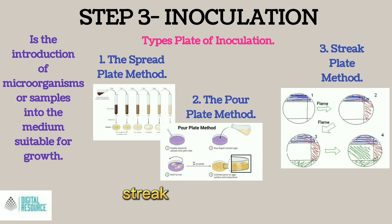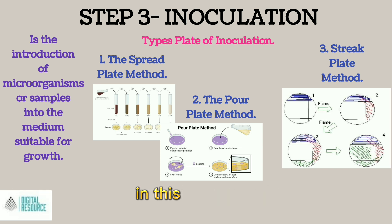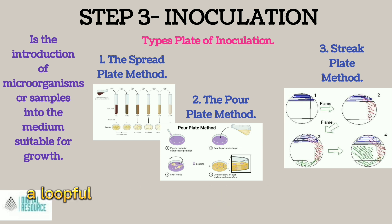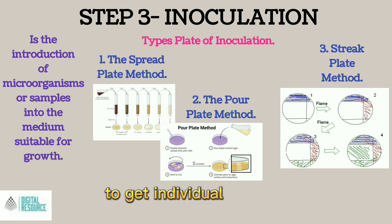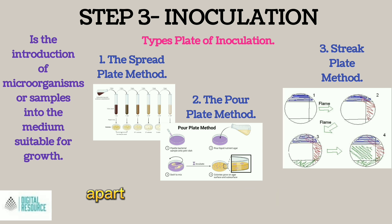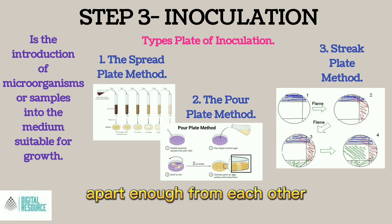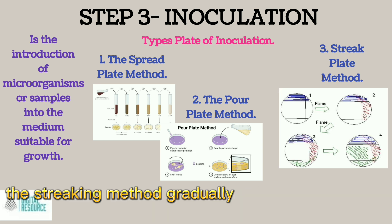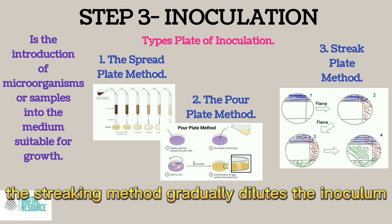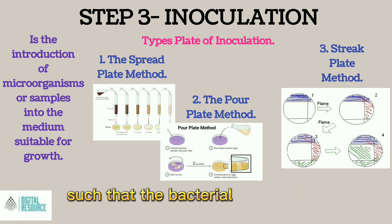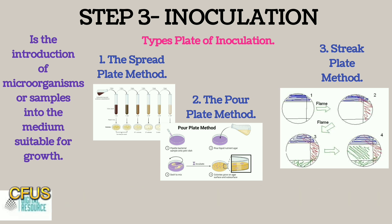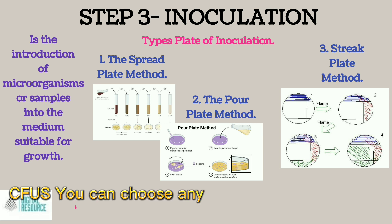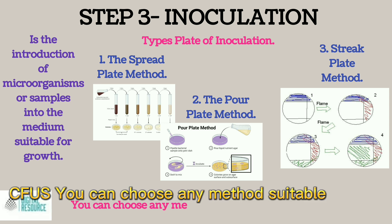3. Streak Plate Method: in this technique, a loopful of culture is spread on an agar plate to get individual cells far apart enough from each other. The streaking method gradually dilutes the inoculum such that the bacterial cells can be counted as colony-forming units (CFUs). You can choose any method suitable for you.